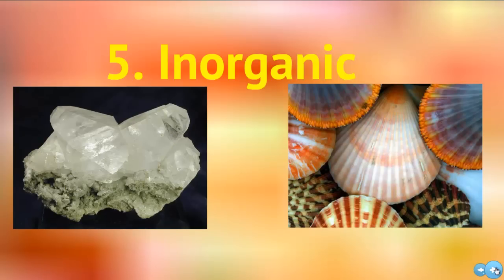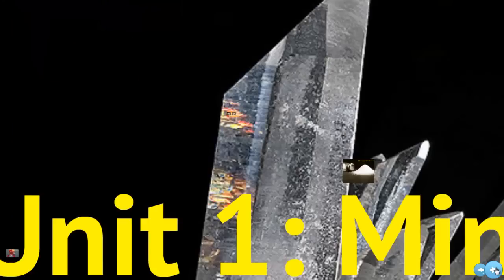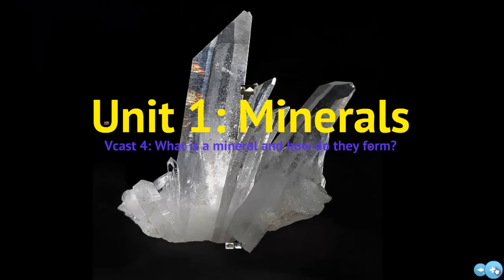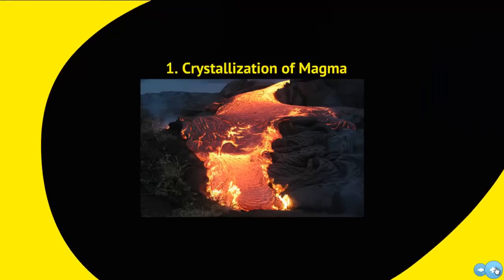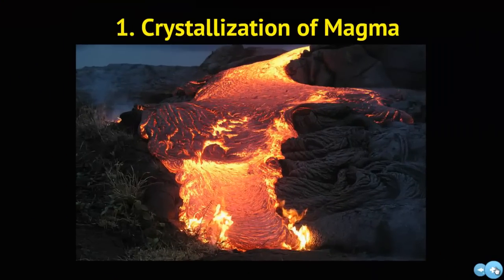How do these minerals form? There are four ways. First, crystallization of magma: you take magma, which is basically melted rock, and cool it down. As it cools, those atoms attract one another, bond together, and make a mineral — they precipitate out of the magma and form crystals.